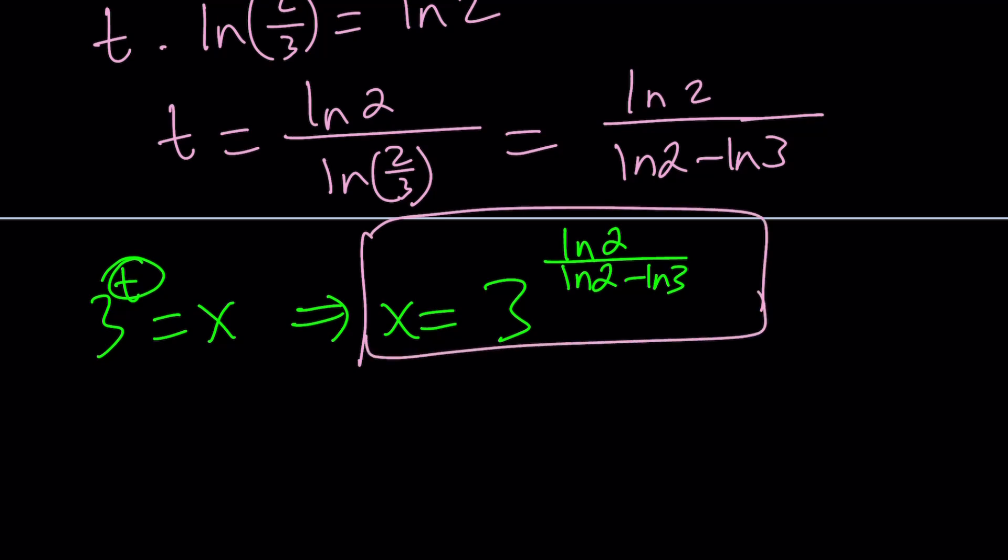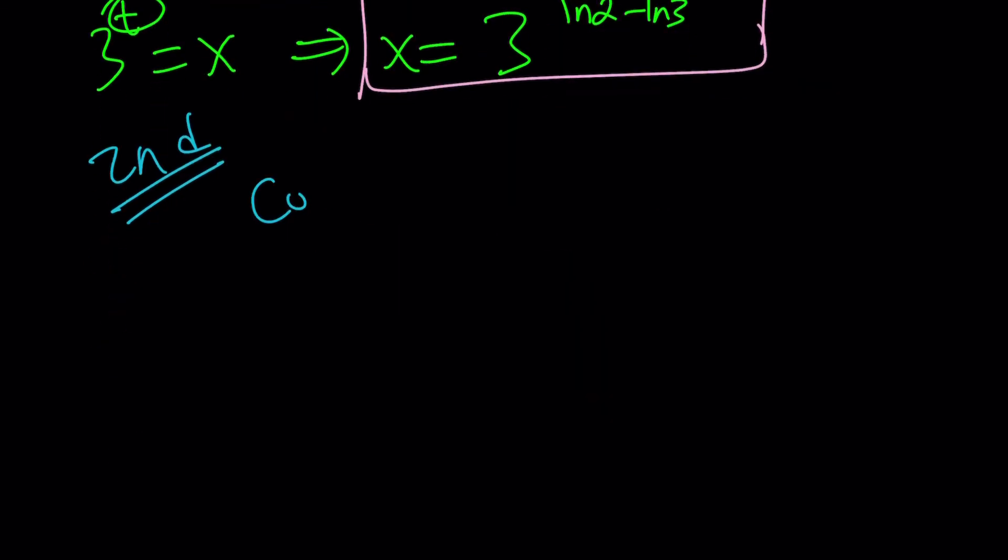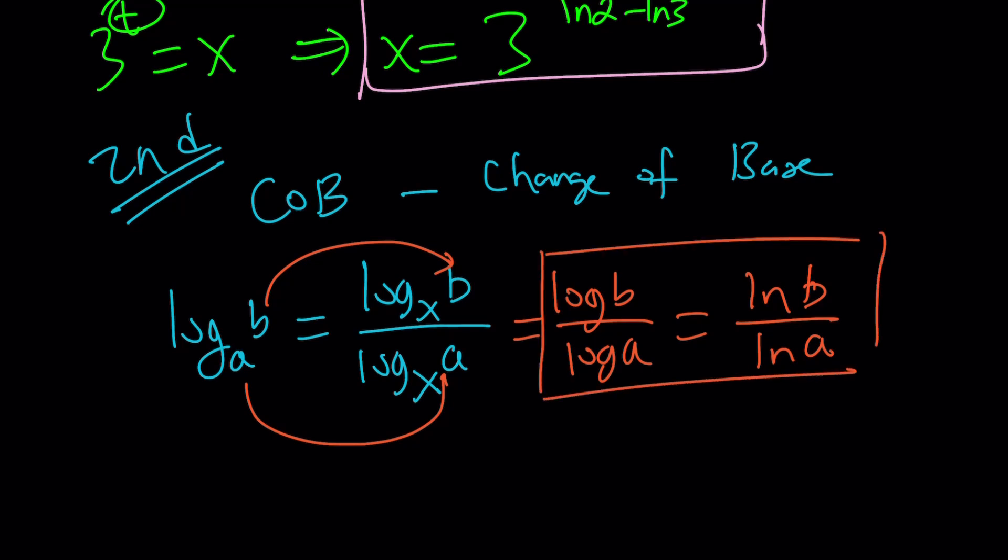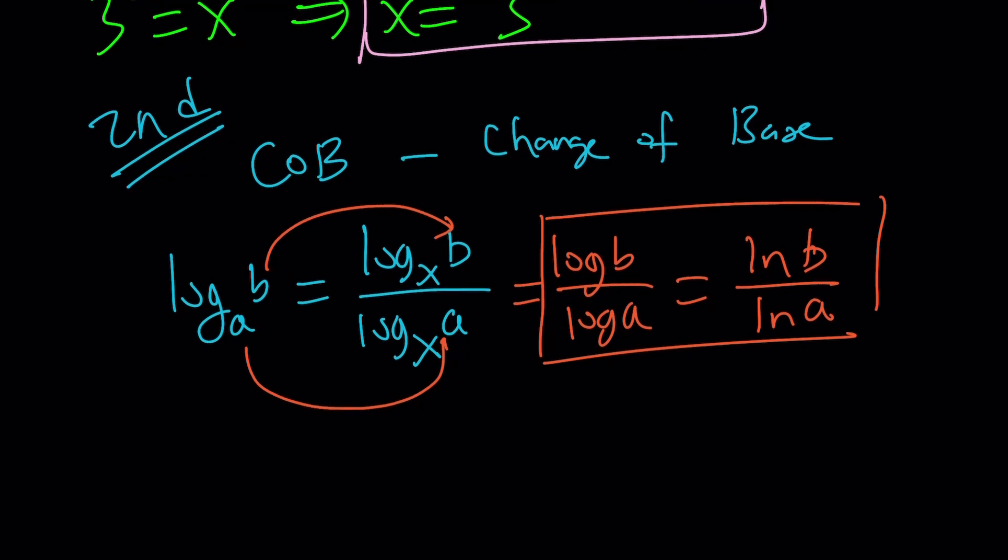The second method uses a property called COB or change of base. Change of base is a very helpful formula. If you have log B with base A and I want to write it in a different log like base X, I can put the B here on top and put the A at the bottom: log_X(B) / log_X(A). A goes at the bottom, B goes on top. If you don't want to use any base X, you can use base 10, which is just log, or you can use ln, which is base e. It's very easy to transition from one to the other.